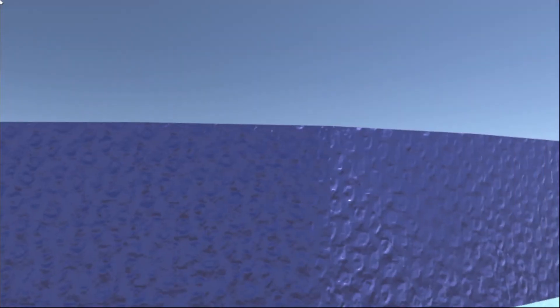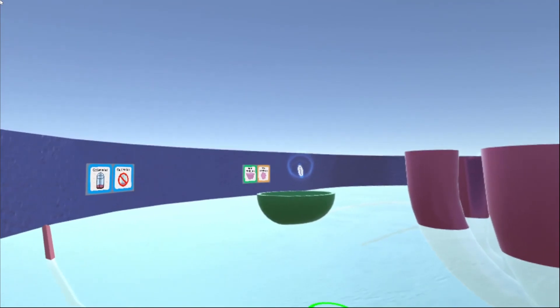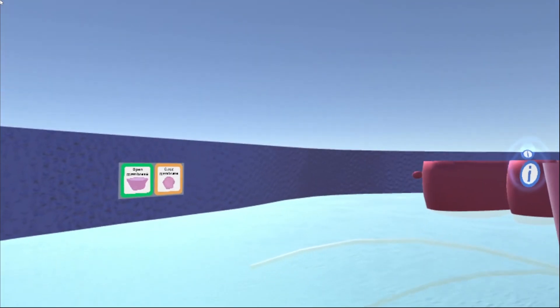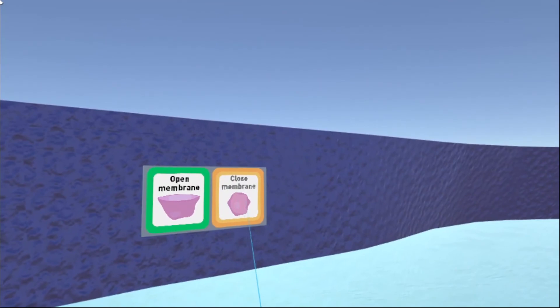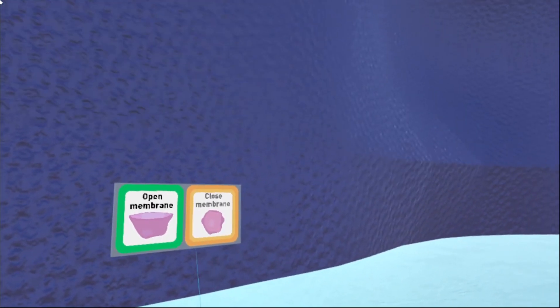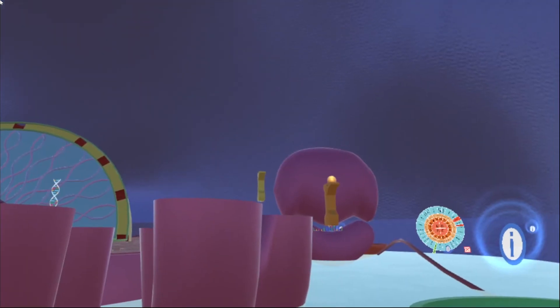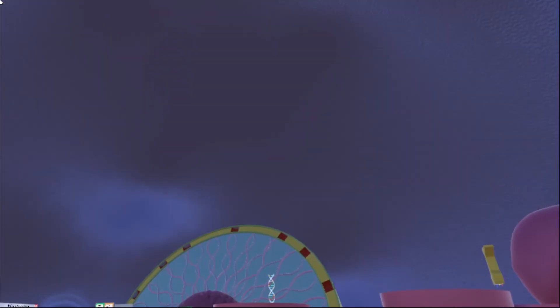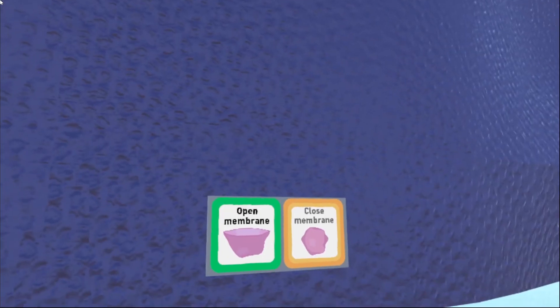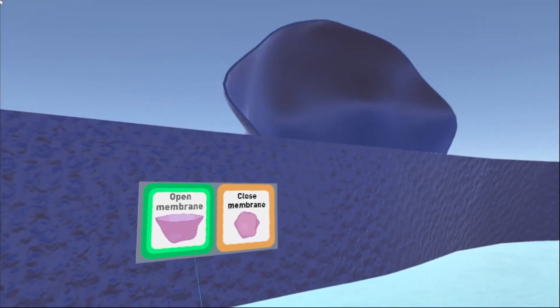A couple more things I want to show you all in this location. First of all, if you look up, you'll see that we are underneath some crystal clear blue skies. But if you want to feel totally encapsulated in the cell, we can click that close membrane button. And now we are fully surrounded by the cellular membrane in here. I personally prefer it with the open membrane, so I'll open it back up.